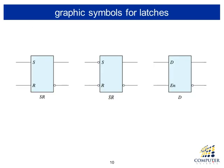Here are the graphic symbols for latches. For the SR latch, note whether there is a small circle on the input or output side. The Q output and the Q-not output are shown, where Q-not is specified by a small circle acting as an inverter. A small circle on the input side means the low level is considered the true value. SR latches with inverted inputs are specified as S-not and R-not. For D latches, we have one input only, which is a subset of the SR latch.